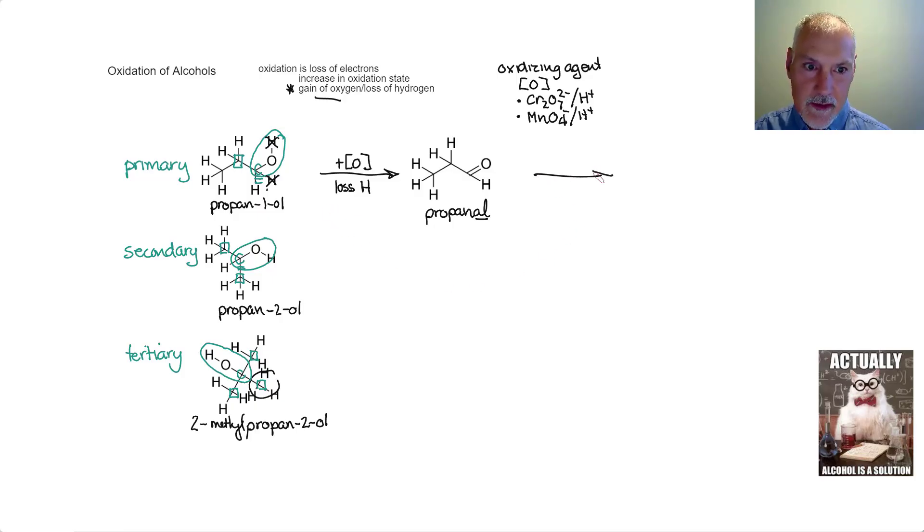I can further oxidize the propanal in the presence of more oxidizing agent. And I can produce this, a three-carbon acid, propanoic acid. And moving from this structure, you can see that I've sort of inserted oxygen in here, so we've added oxygen. Again, meeting our definition up here.